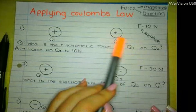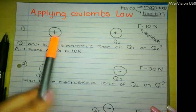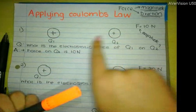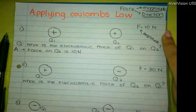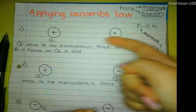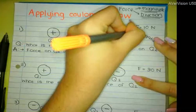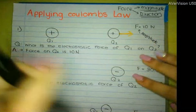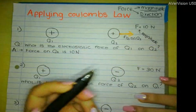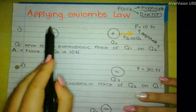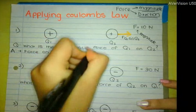So let's think about direction. Q2 is positive and Q1 is also positive. Will Q2 be attracted to Q1 or repelled away from Q1? Like charges repel, so Q2 is definitely not going to go to the left — it's going to go to the right. So if I had to draw it, the force would point this way. This is the force of Q1 on Q2. So your answer is: the force on Q2 is 10 newtons to the right.